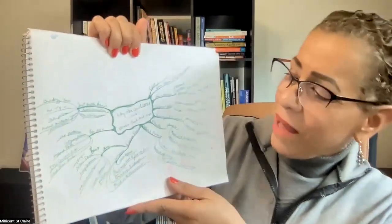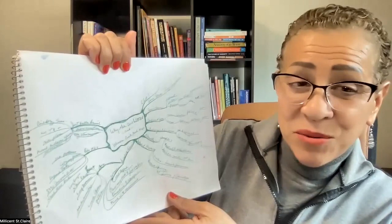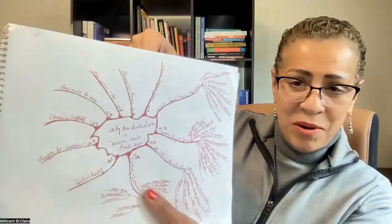Now here comes the low-down and dirty. Here's a map from a book called 'Why Men Don't Listen and Women Can't Read Maps.' This book is so good — kind of like 'Men Are from Mars, Women Are from Venus' — because it explains the differences between genders and what's really going on inside our neurophysiology and perceptions. I absolutely loved it. That was a hand-drawn map, and there was a second part.